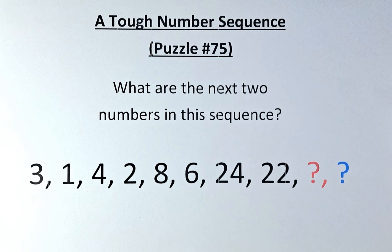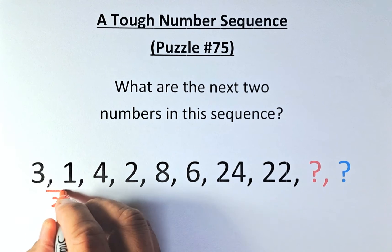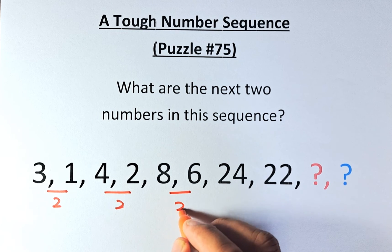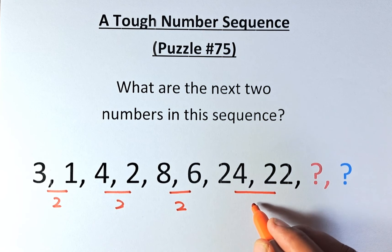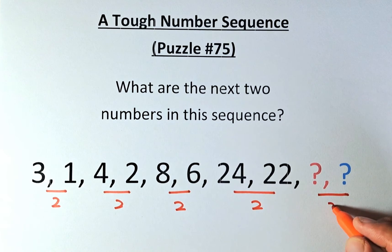The first thing you notice is that from 3 to 1, the difference is 2. 4 to 2 is also 2, 8 to 6 is also 2, and 24 to 22 is also 2. So the two question marks must also have a difference of 2.